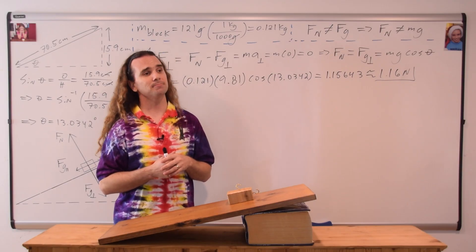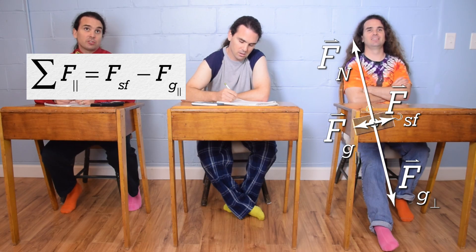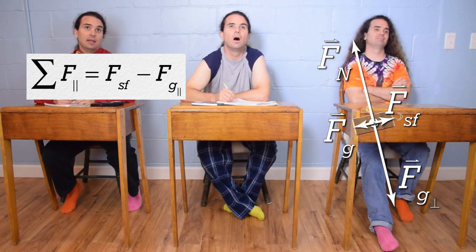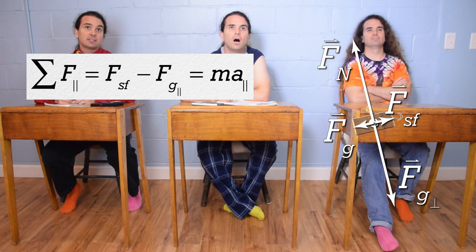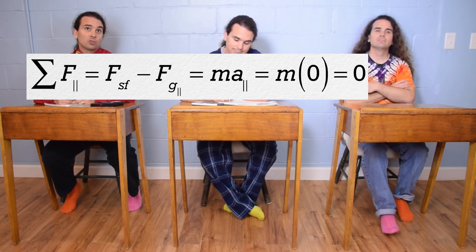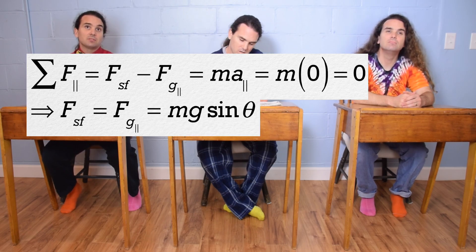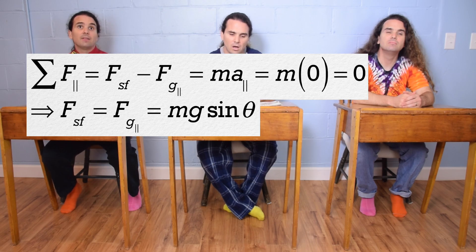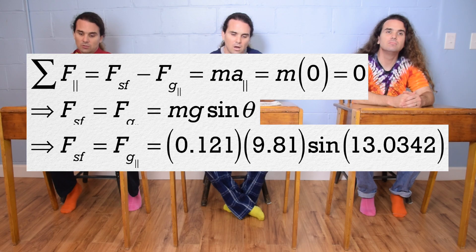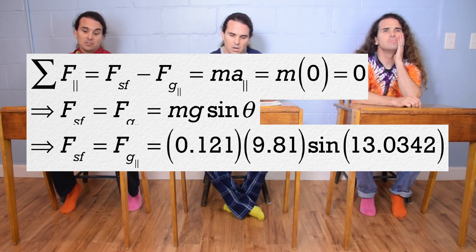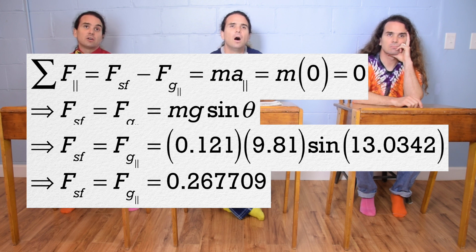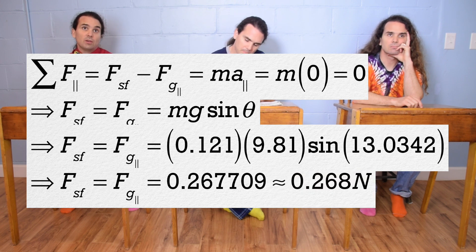Billy, the parallel direction please. The net force in the parallel direction equals the force of static friction, which is positive because it is up the incline, and the force of gravity parallel, which is negative because it is down the incline, which equals mass times acceleration in the parallel direction. Since acceleration is 0, the force of static friction equals the force of gravity parallel, which equals mass times the acceleration due to gravity times the sine of the incline angle, which is 0.121 × 9.81 × sine of 13.0342, which is 0.267709, or 0.268 newtons with three significant figures.